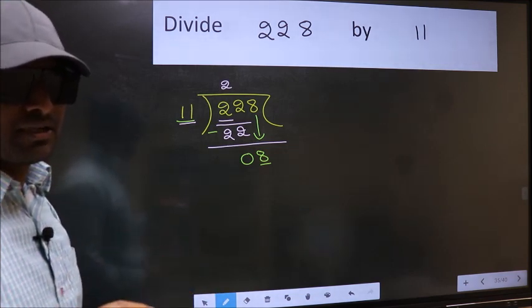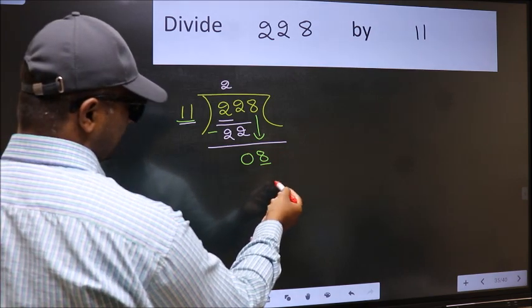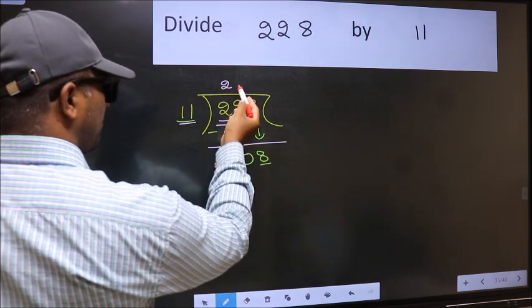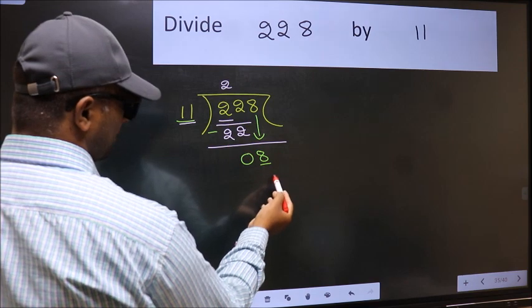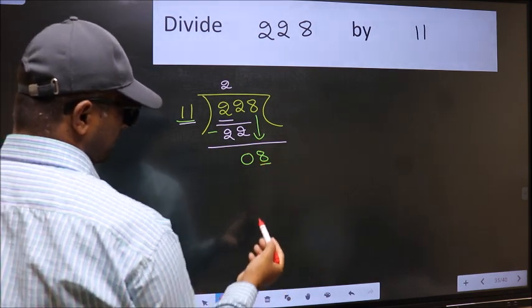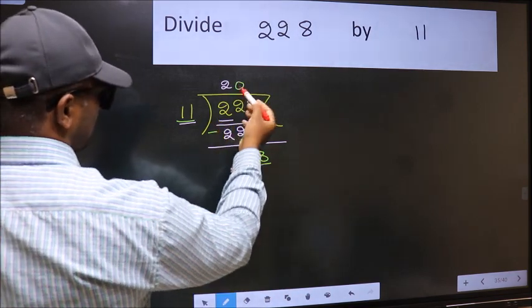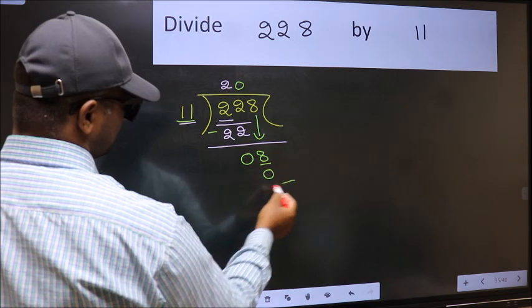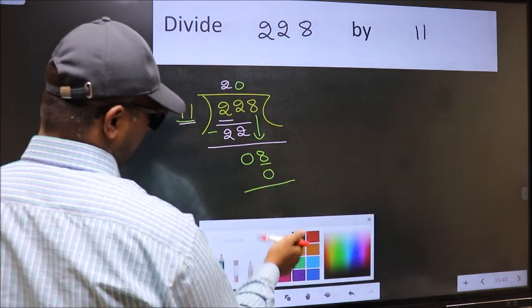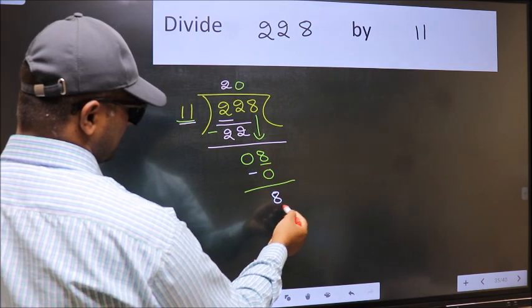Instead, what you should think of doing is, which number should we take here? If I take 1, we will get 11. But 11 is larger than 8. So what we should do is, we should take 0. So 11 into 0 is 0. Now you should subtract. 8 minus 0 is 8.